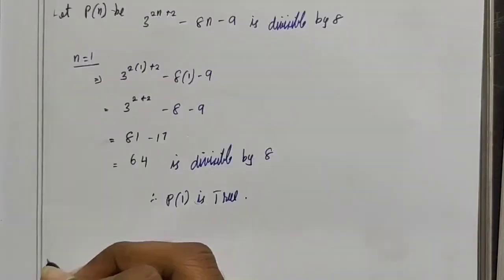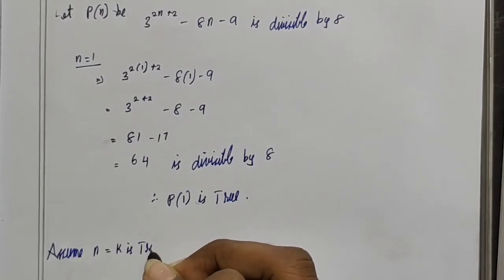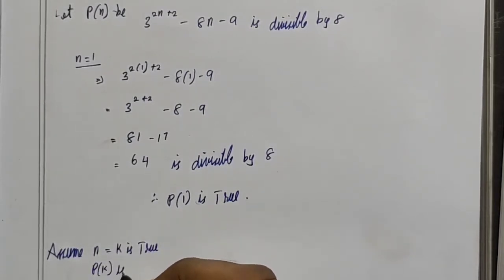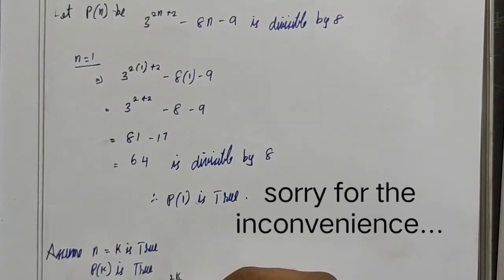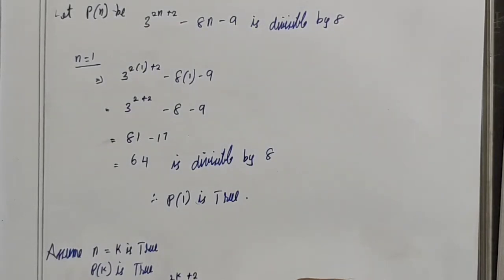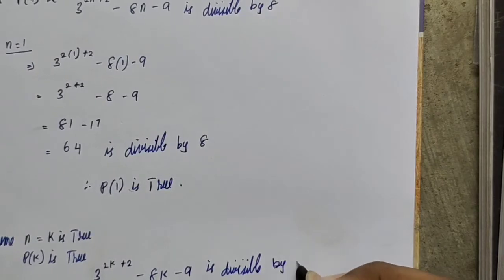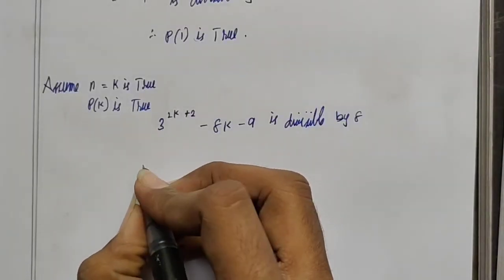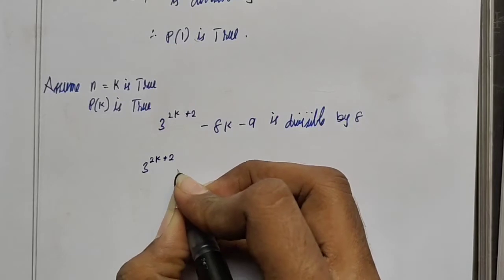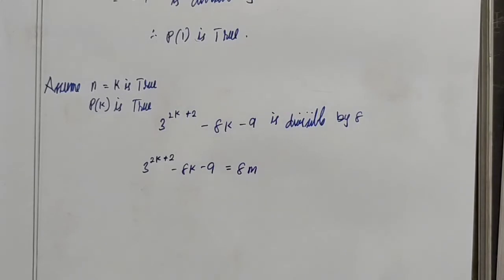Second step: Assume n equal to k is true. P of k is true. So 3 power 2k plus 2, minus 8k, minus 9 is divisible by 8. We write this as: 3 power 2k plus 2 minus 8k minus 9 equals 8m.